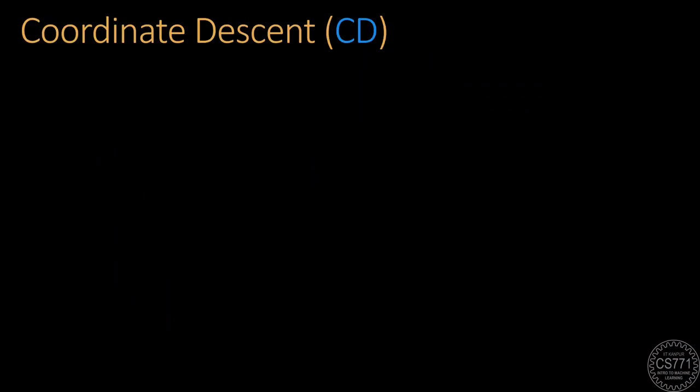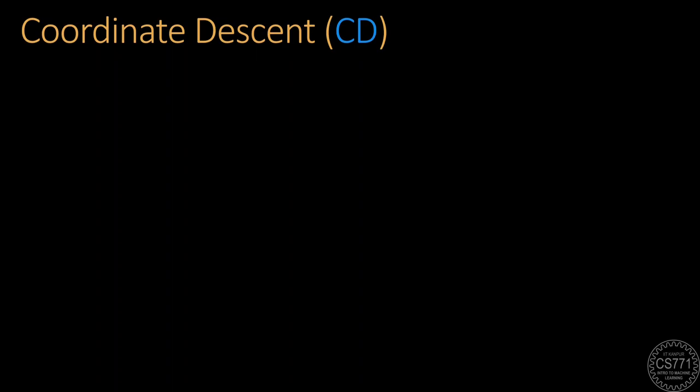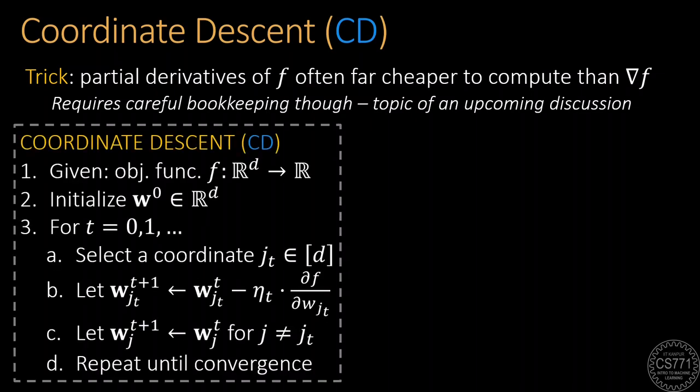It turns out that there is a completely different route to making gradient descent more scalable. This technique relies on the fact that if careful bookkeeping is done, which will be the topic of a future discussion, then computing the partial derivatives of a function may be far cheaper than computing its full gradient or sub-gradient. This gives us the coordinate descent algorithm. At each iteration, one of the d coordinates of the model is chosen. The partial derivative of the objective is computed along that coordinate and just that coordinate of the model is updated. All other coordinates are fixed to their old values.